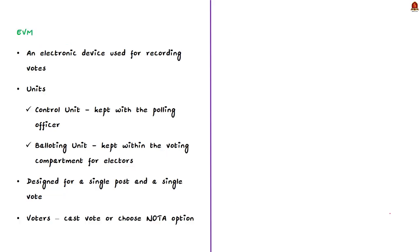Now coming to the function of electronic voting machines. An electronic voting machine is an electronic device used for recording votes. It consists of two units, namely control unit and balloting unit. These units are joined together by a cable. The control unit of the EVM is kept with the presiding officer or the polling officer. The balloting unit is kept within the voting compartment for electors to cast their votes. The EVM is designed for a single post and a single vote.